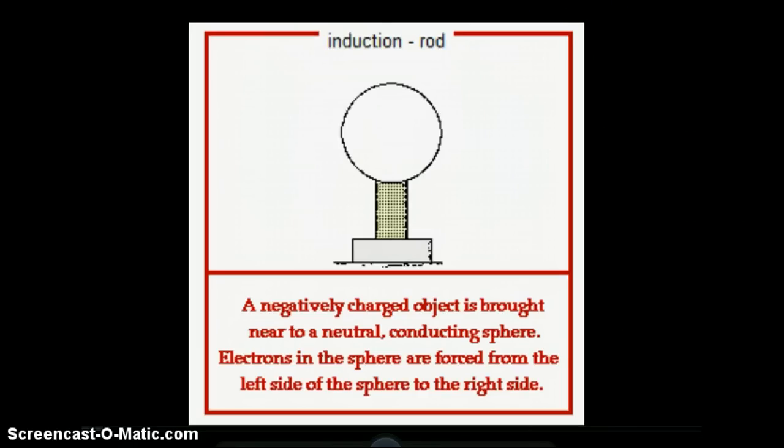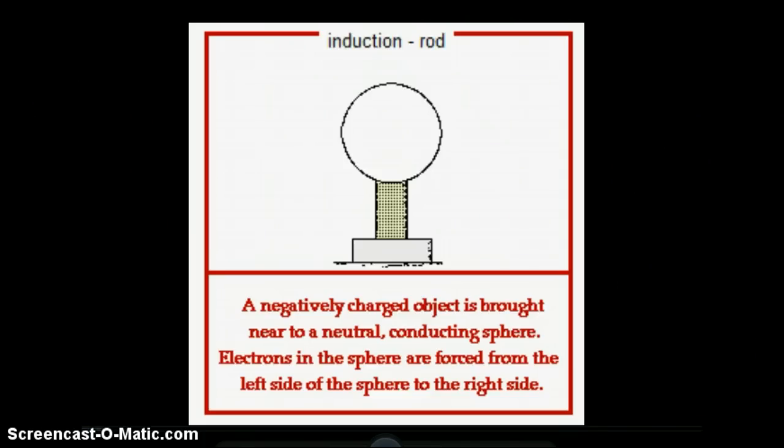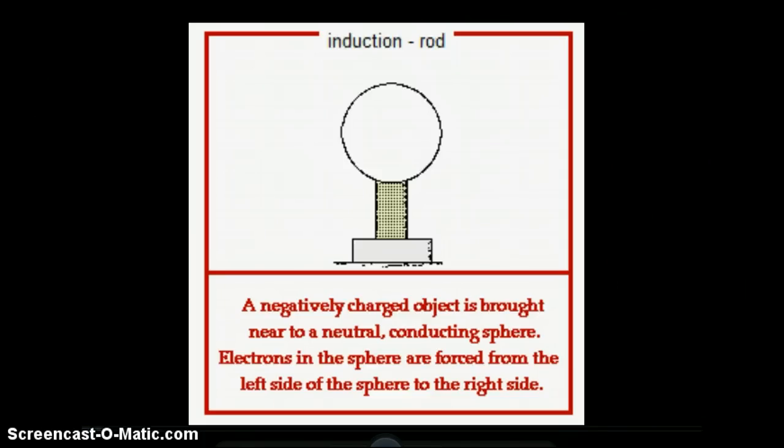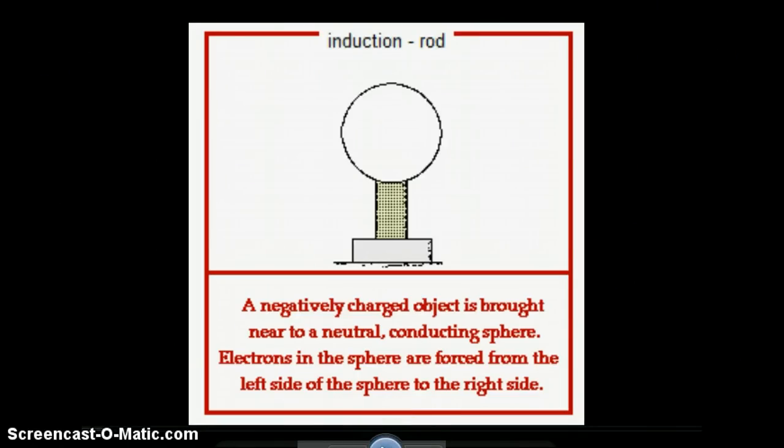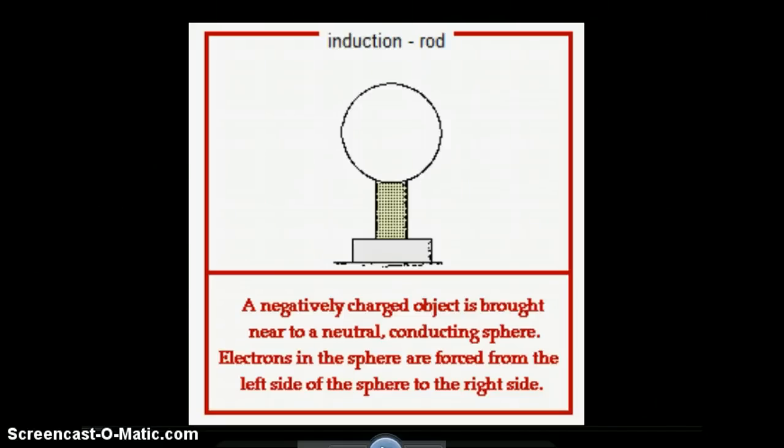Now this video clip takes us through what happens when you charge by induction, which is a multi-step process. First, we have a conductor. So to charge by induction, we're really looking at conductors. It's a metal sphere, so metal is conductor.